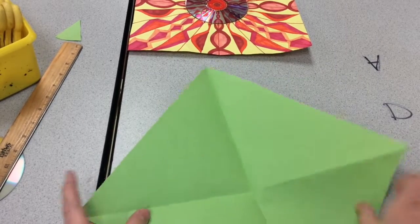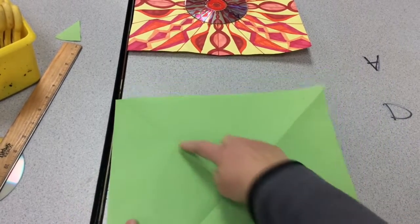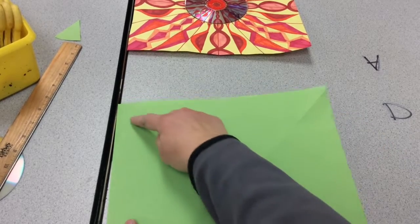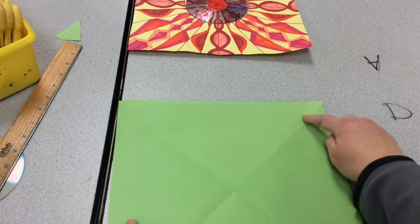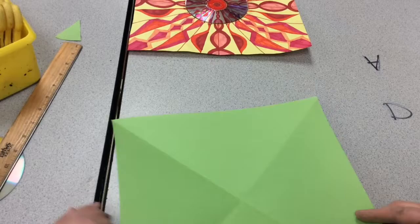I'm going to fold it again. How many pieces is this going to be when I open it up? I have one, two, three, four. I also think, what kind of angle is this? Do you know how many degrees that angle would be? That would be 45 degrees.